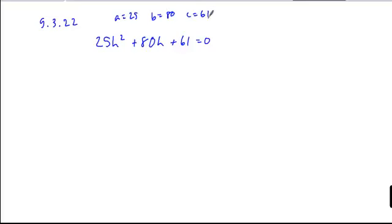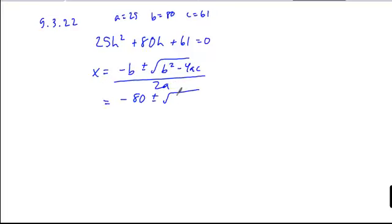If we look at our coefficients, we can plug in x is equal to negative b plus or minus root b squared minus 4ac all over 2a. Plug in our numbers. Negative 80 plus or minus 80 squared minus 4ac all over 2a.